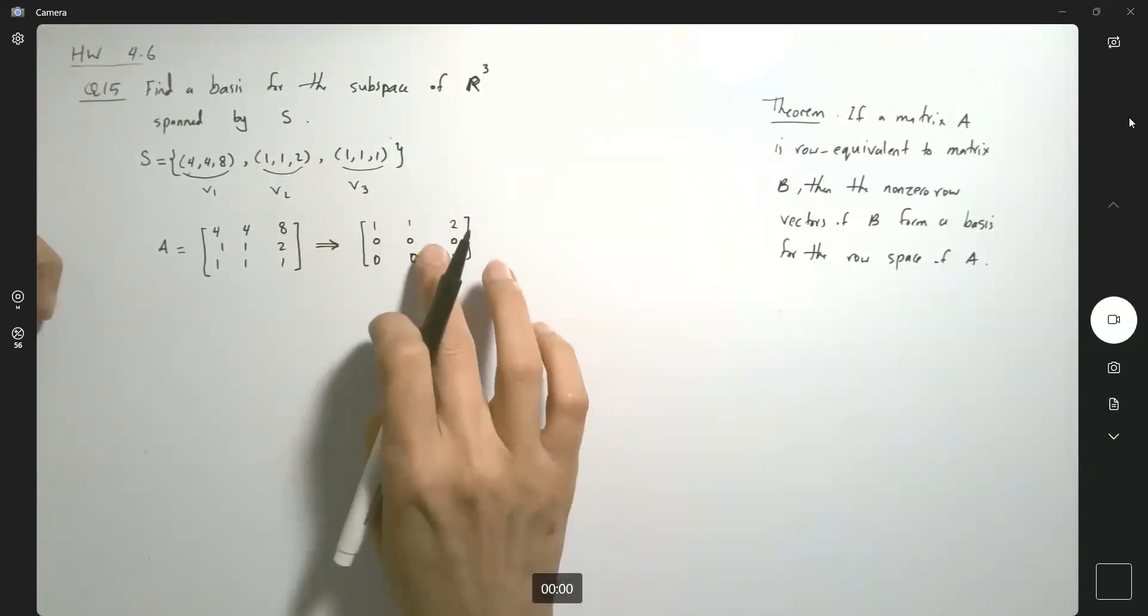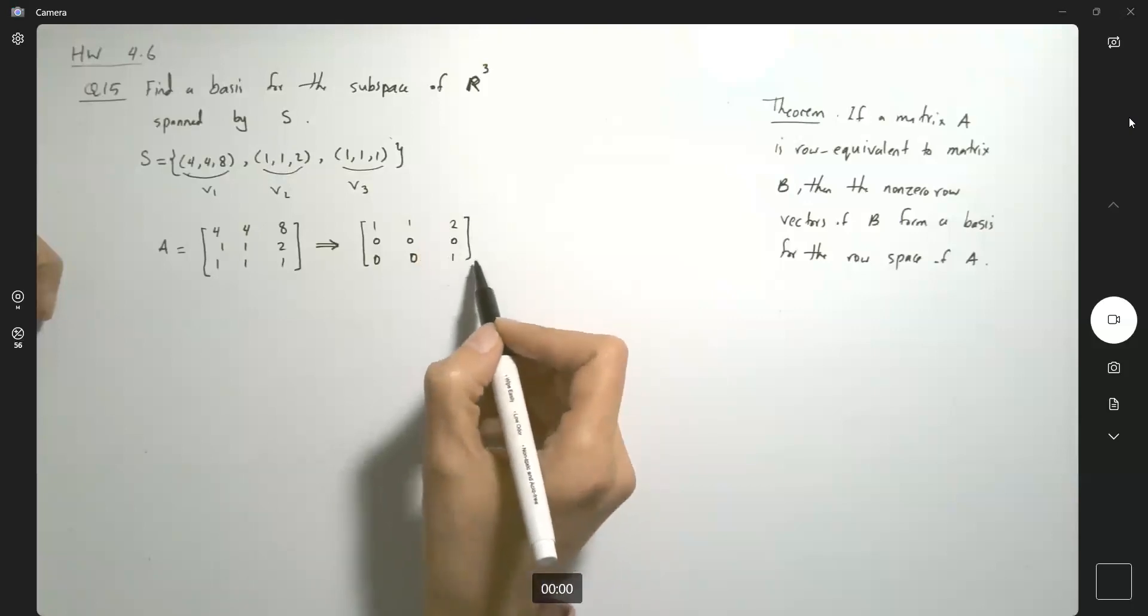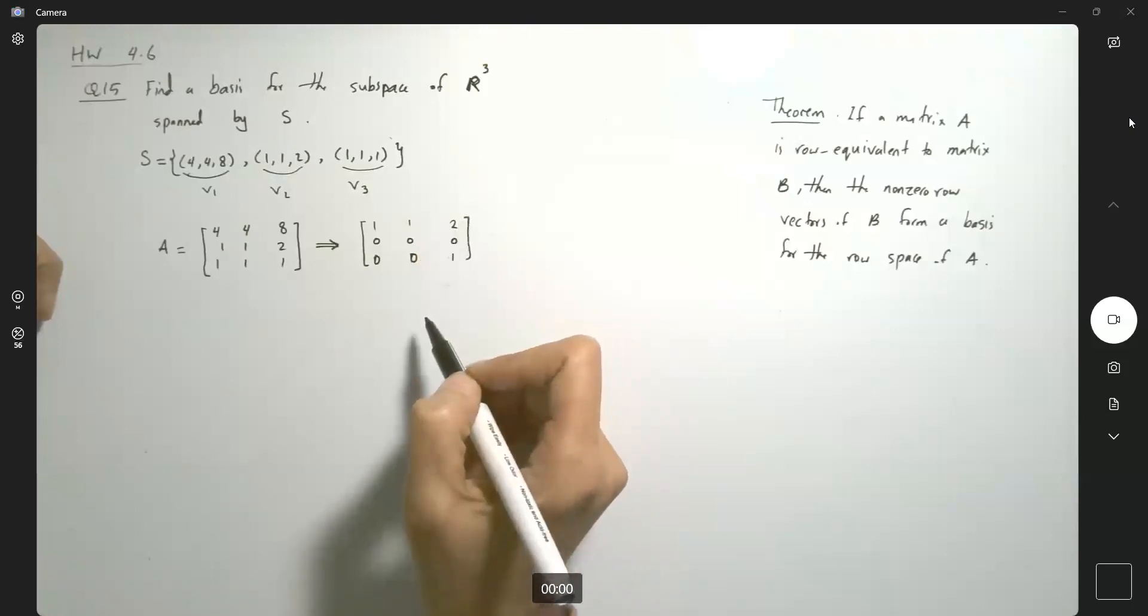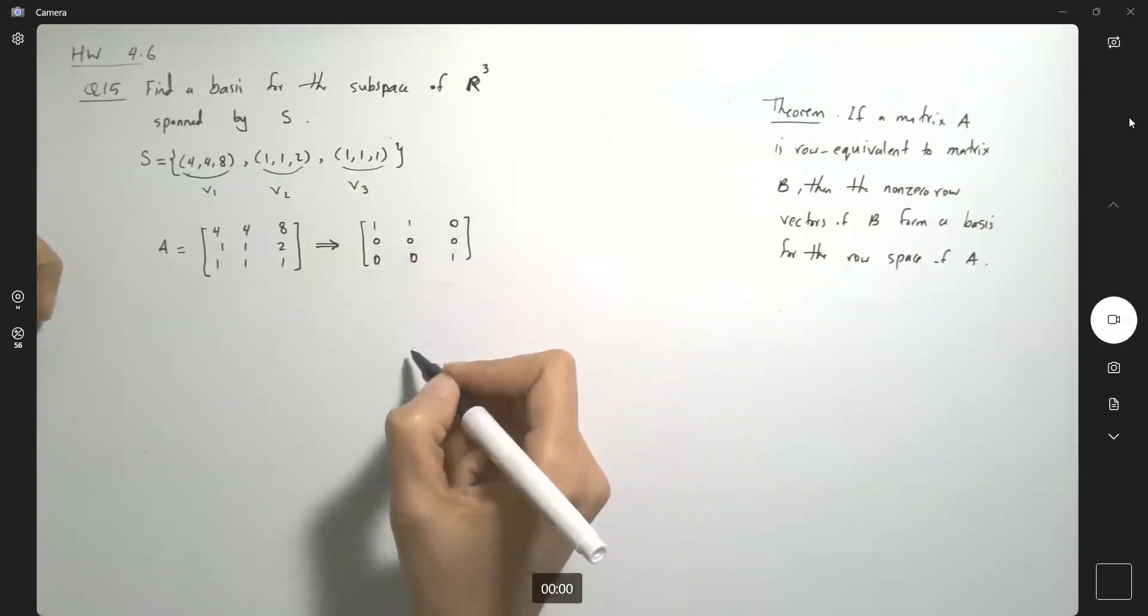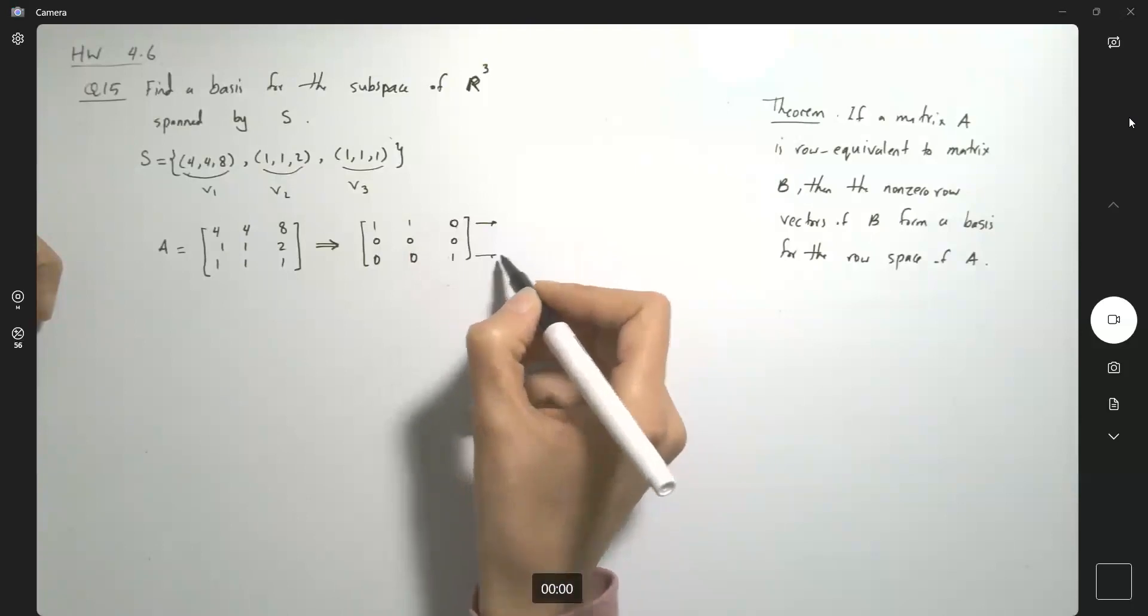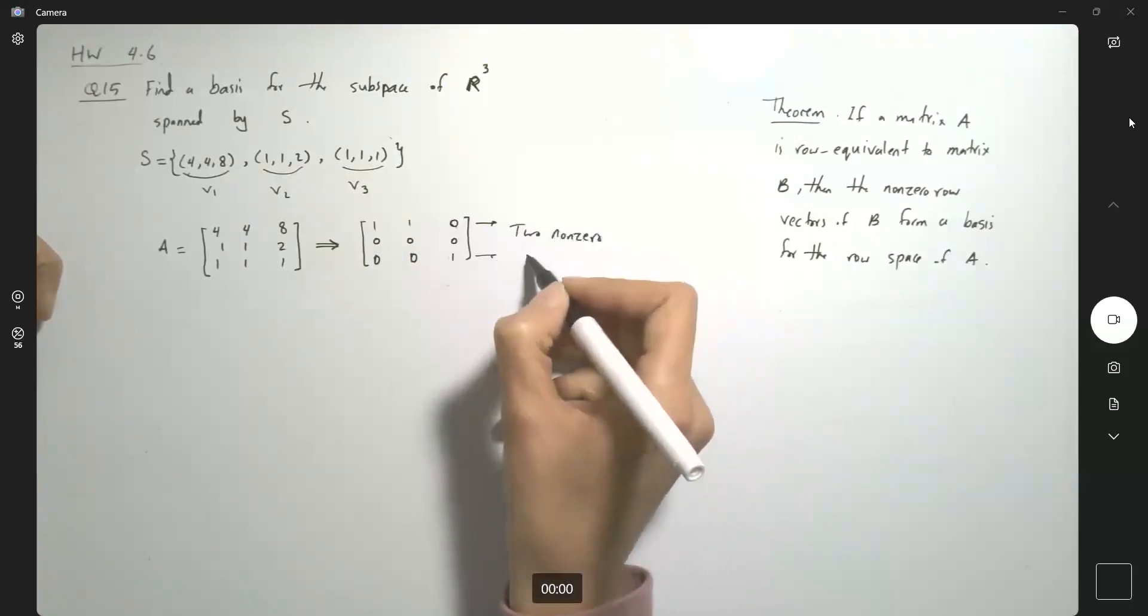You can simplify this more. Multiply it by negative one and then multiply by negative two and add it to the first row. This guy becomes zero. So we have two non-zero vectors.